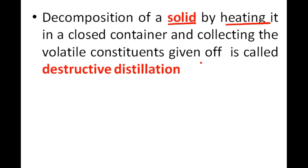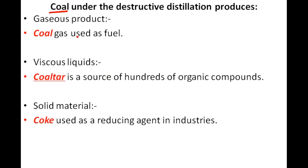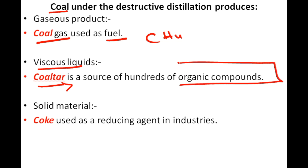Under destructive distillation, the solid is decomposed and different components are collected. From the destructive distillation of bituminous coal, we get coal gas — which is mainly methane gas and is used as a fuel — and also viscous liquid known as coal tar. Coal tar is also an organic compound containing hundreds of organic compounds. We will have another section for the discussion of coal tar. Another product is the solid material known as coke.